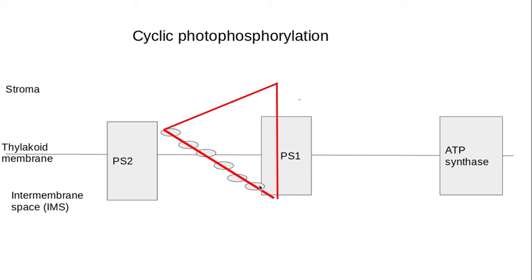The reason why a plant would undergo cyclic photophosphorylation is usually if there is a limitation on water availability, because in this particular example of cyclic photophosphorylation, the electron is constantly recycled.